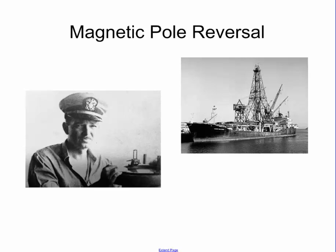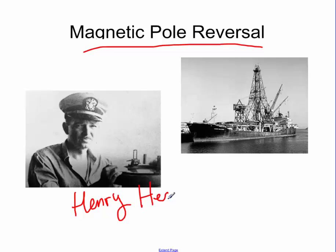One of the final pieces of evidence that helped solidify continental drift was magnetic pole reversal. Henry Hess was a U.S. Navy captain during World War II who was scanning the ocean floor with sonar looking for German U-boats. In doing so, they discovered a mountain range in the middle of the Atlantic Ocean that ran its entire length. After the war, using a ship called the Glomar Challenger, they took samples of the ocean floor all the way across from Europe to America and discovered evidence of magnetic pole reversal in the rock. This was the final proof — like DNA evidence in a murder case — that the continents were in fact moving.